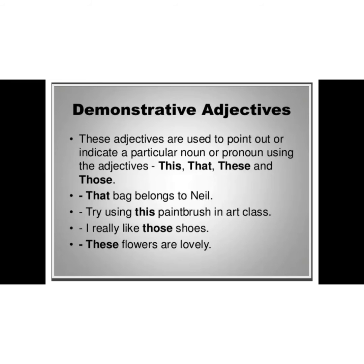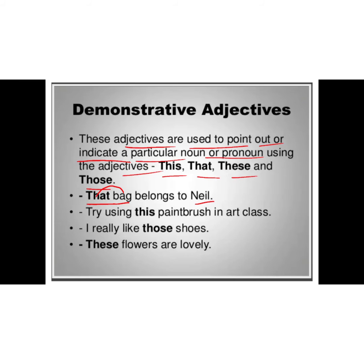Let us understand demonstrative adjectives. These adjectives are used to point out or indicate a particular noun or pronoun using words like this, that, these, those. For example: That bag belongs to Neil. In this sentence, the words bag and Neil are nouns, but the word that is pointing towards or describing the position or location of the noun. So this is a demonstrative adjective.